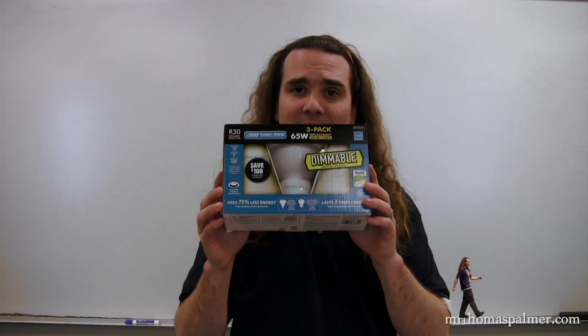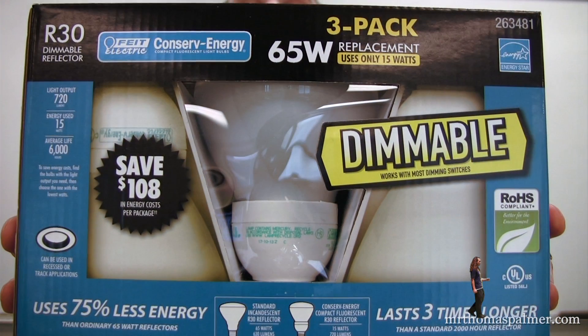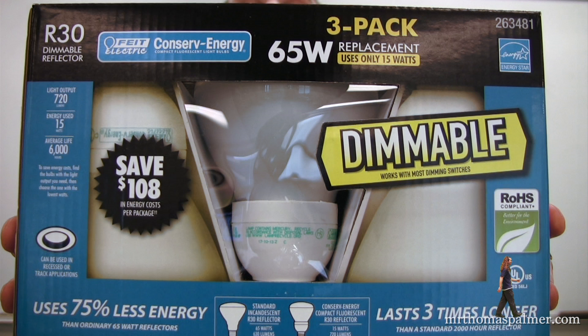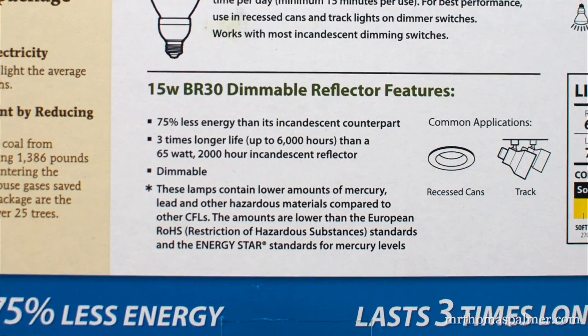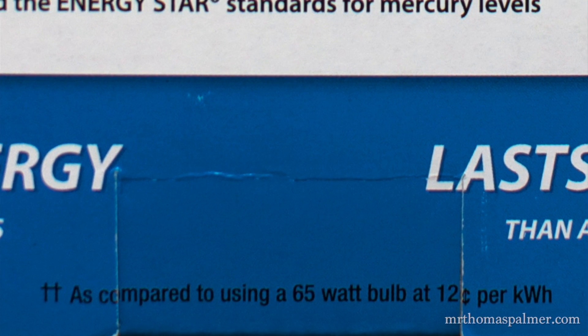So, on this box of energy-efficient light bulbs, it says that we could save $108 in energy costs per package. So, per three light bulbs, we could save $108. And it says, if you check the asterisk, which requires you to go on the back, it says, as compared to using a 65-watt bulb at 12 cents per kilowatt hour. So, clearly, we need to know what a kilowatt hour is.